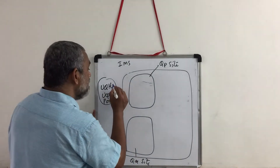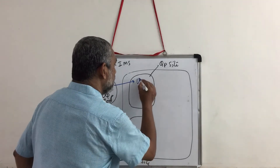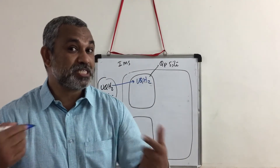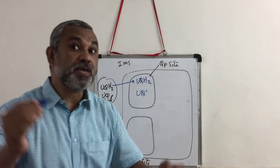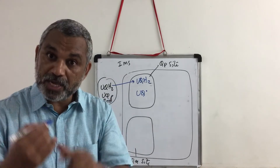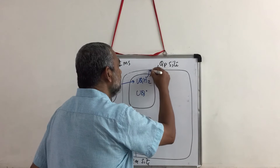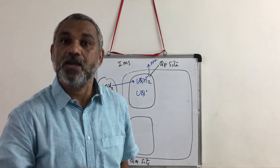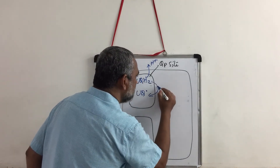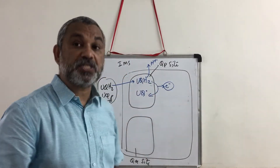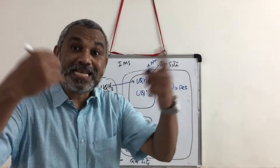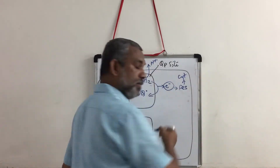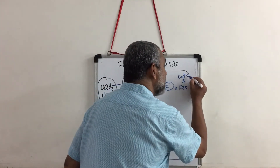Initially, UQH2 is transferred to the QP site. The UQH2 splits: one hydrogen is removed, the H+ is pumped across the membrane, and the molecule becomes a semi-quinone form. That electron released from UQH2 is transferred to an iron-sulfur protein, which then transfers the electron to cytochrome C1.